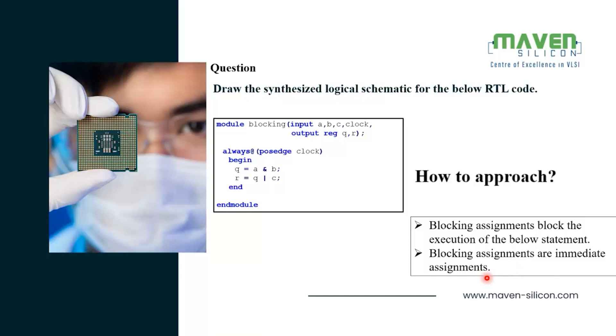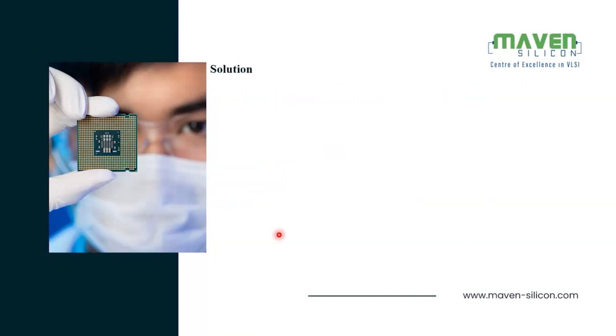Now let's see the solution. In the solution, let's first understand the behavior of the process. For every positive edge of the clock, this process is going to trigger and the output of the AND logic is registered to Q at the positive edge of the clock.